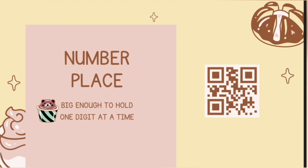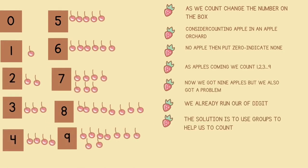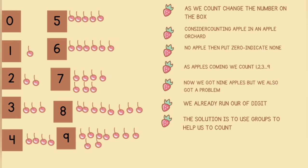The best way to understand a number place is to imagine that it's like a small box that's only big enough to hold one digit at a time. As we count, we will change the digit in the number place to match how many apples we have picked. For example, if we start with no apples at all, we put the digit zero in the number place because zero means none.